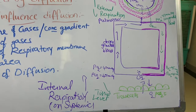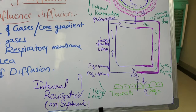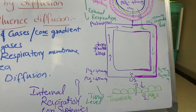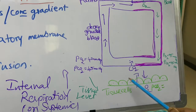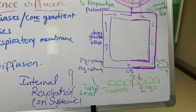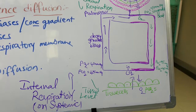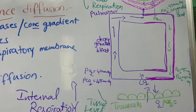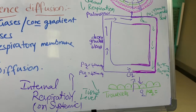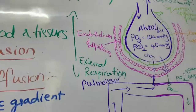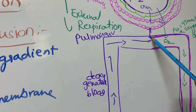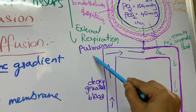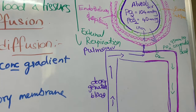At the tissue level, carbon dioxide is more and oxygen is less because cells use oxygen for respiration. The exchange of oxygen and carbon dioxide at the tissue level is known as internal respiration or systemic respiration. The exchange of oxygen and carbon dioxide at the alveolar level is known as pulmonary respiration or external respiration.